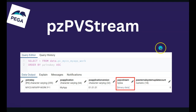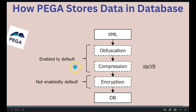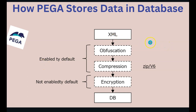Pega follows a certain process to store this data. The XML which gets generated when a work object is created would be obfuscated, compressed, encrypted, and then stored into the database — like we saw in that pzpvStream column. These terms might sound complex, so let's try to demystify and break them into much simpler terms.